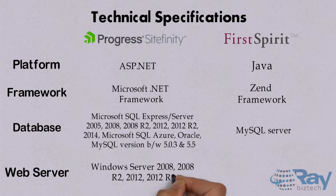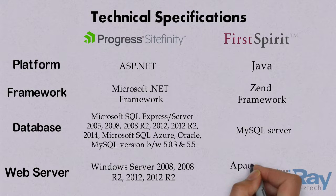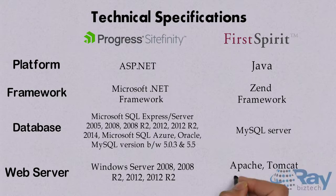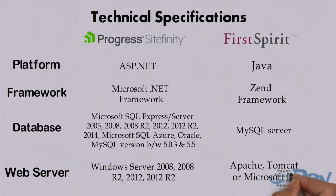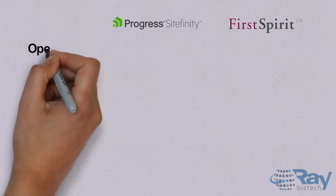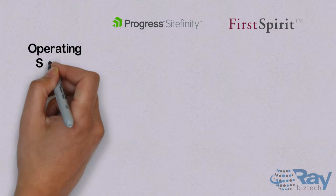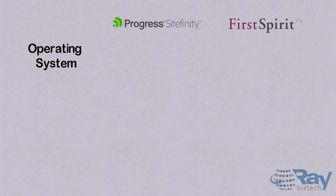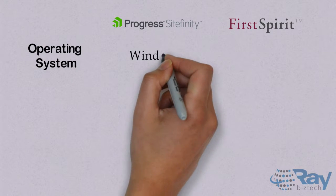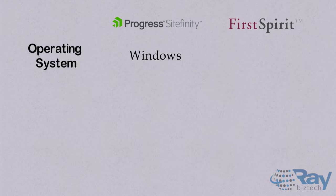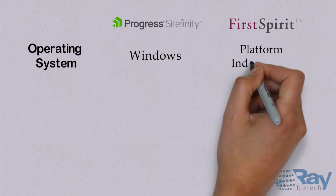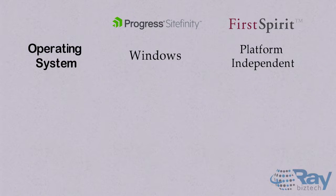Web Server: it is Windows Server 2008-R2 and 2012-R2 for Sightfinity. For First Spirit it is Apache, Tomcat, or Microsoft IIS.